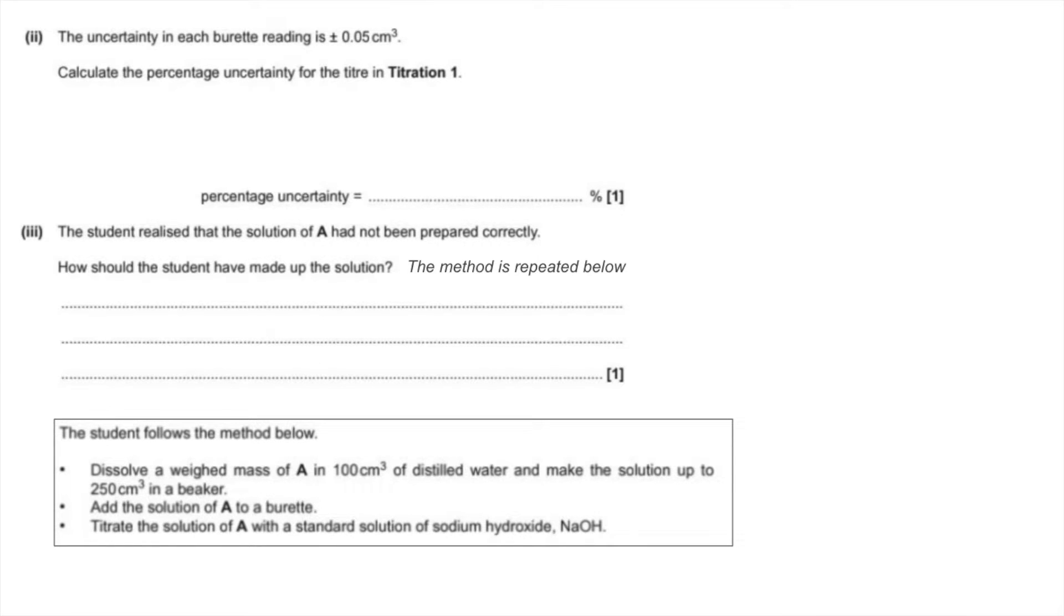Moving on to the next part of C, we've got to calculate the percentage uncertainty for the titre in titration one. Just a reminder that titres are based on two burette readings, so we have to double the error. The formula is error divided by the measured amount multiplied by a hundred. The doubled error 0.1 divided by the titre for titration one, 26.85, multiplied by a hundred gives 0.37. The mark scheme allowed 0.372 or even 0.4.